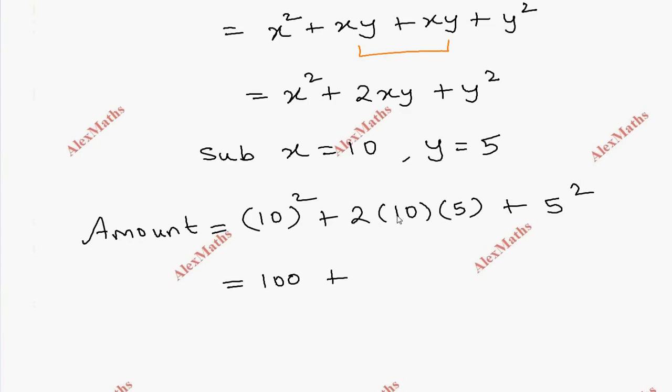2 into 10 is 20. 20 into 5 is 100. 5 squared is 25. The total is 225 rupees. Peace.